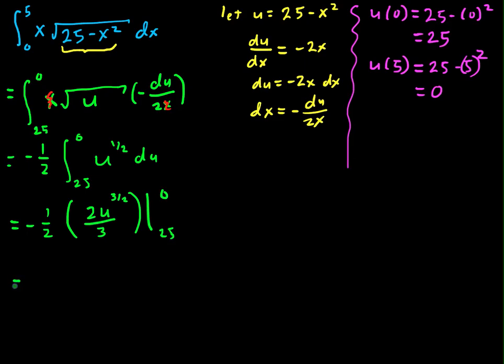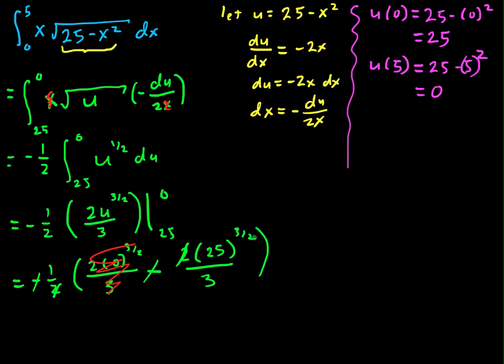And from there, I can put this stuff in. So I get negative 1 half multiplied by 2 times 0 to the 3 halves, well that's easy to evaluate, over 3, minus 2 times 25 to the 3 halves over 3. This is all 0. And what we are left with is negative 1 half times negative 2 times 125 over 3. The 2's cancel, the negatives become positive, and we are left with 125 over 3. And that's the final answer.